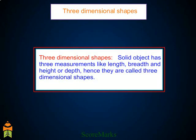Solid objects have three measurements like length, breadth, and height or depth. Hence, they are called three-dimensional shapes.